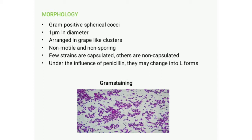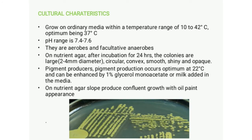Regarding cultural characteristics: Staphylococcus aureus can grow on ordinary media like nutrient agar within a temperature range of 10 to 42 degrees Celsius, with an optimum of 37 degrees Celsius. They have a pH range of 7.4 to 7.6, and are aerobes and facultative anaerobes — able to grow both in the presence and absence of oxygen.